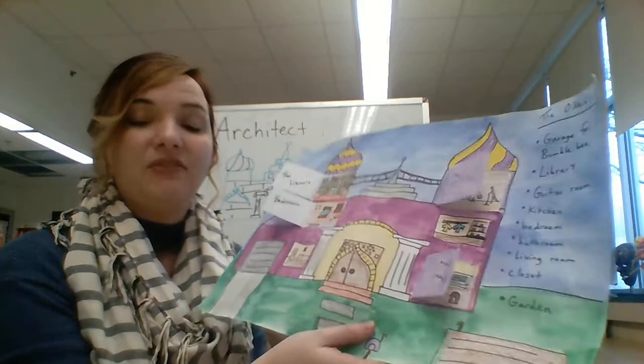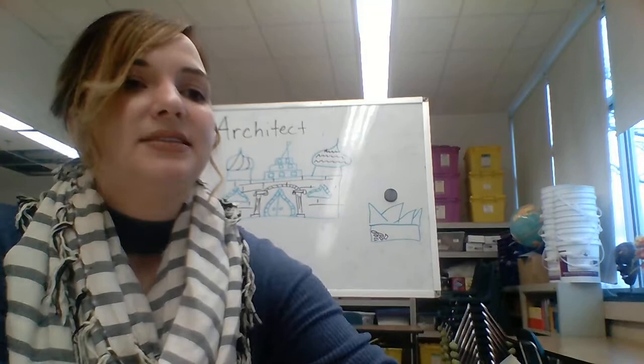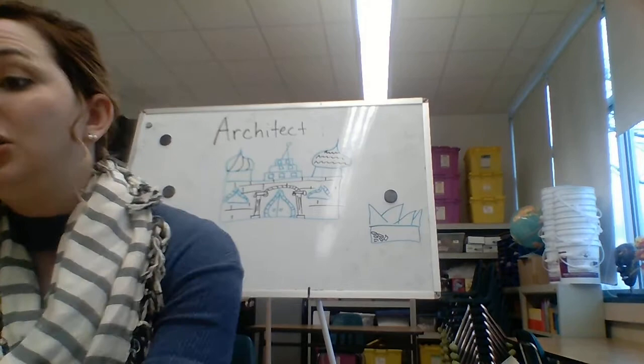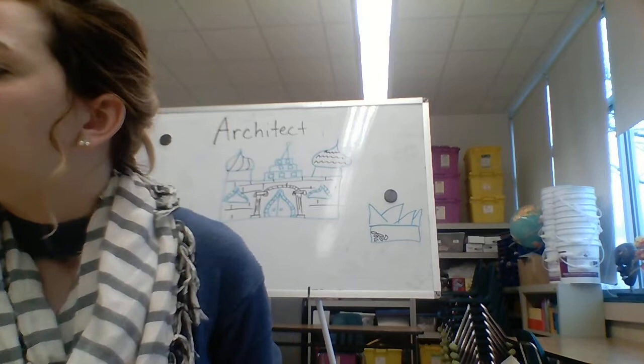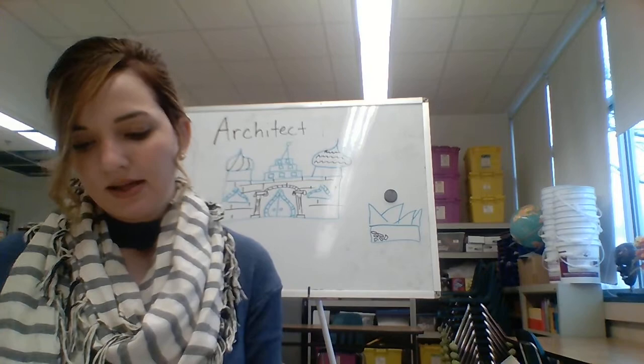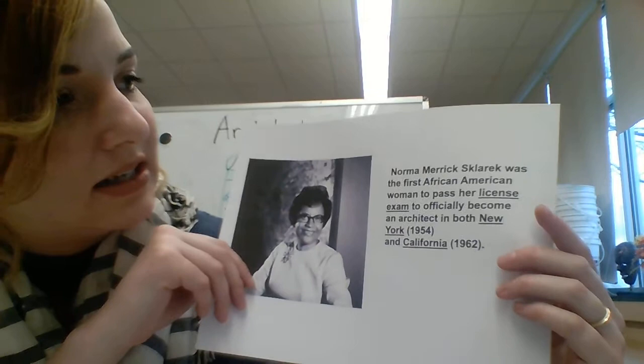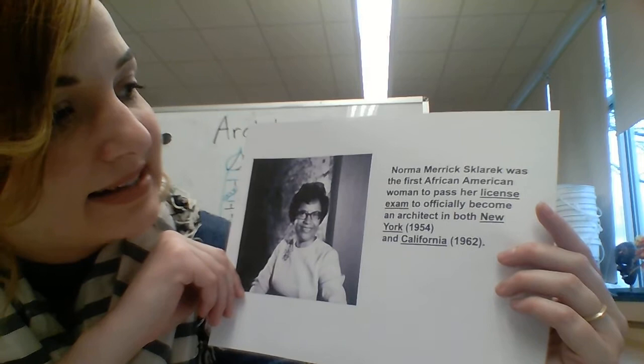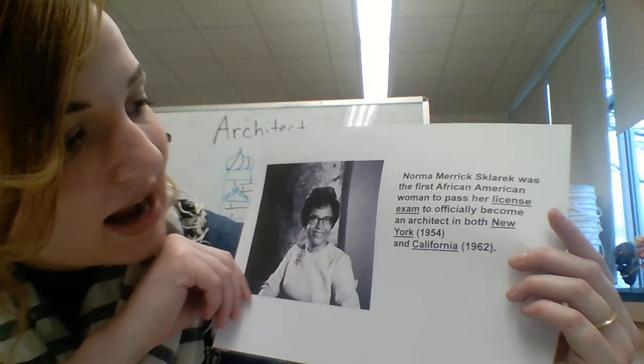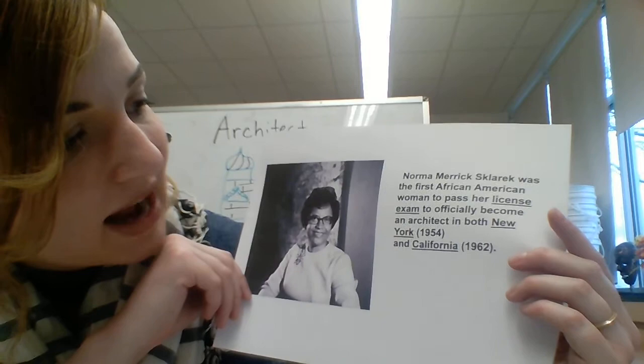Don't forget about the yard — the yard is very important. And make sure that if you want this to count towards your art grade, take a picture of it and send it to my email address, or if your adult uses Remind, they can send it to me that way. Before we leave, I want to talk to you about a specific artist — I really want to talk to you about Norma Merrick-Sklarek. She's a famous architect. Norma Merrick-Sklarek was the first African-American woman to pass her license exam to officially become an architect in both New York in 1954 and California in 1962.